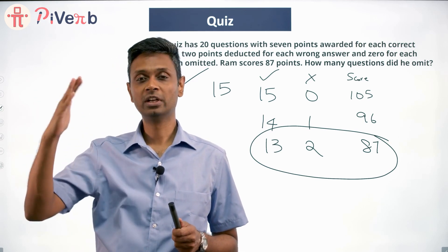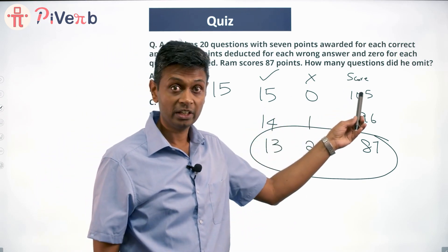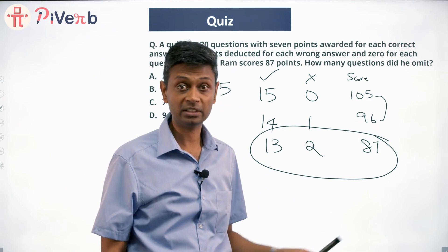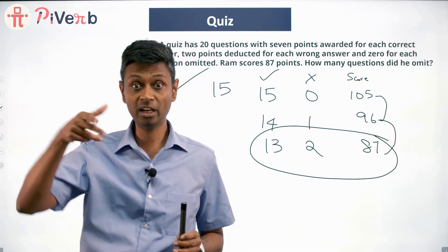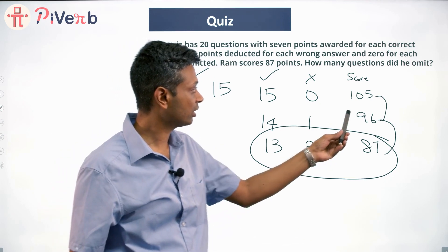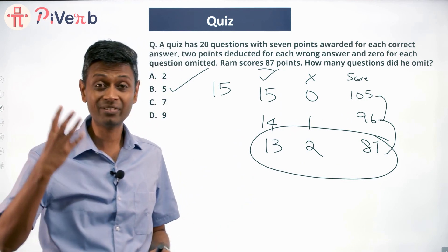Instead of getting plus 7, he gets minus 2. So instead of getting 105, he drops 9 marks. So 105 minus 9, 96 minus 9. So it falls 5 times to 87. 87 is what he's got. So he's left five questions, gotten two wrong, gotten 13 right to get to 87 points.